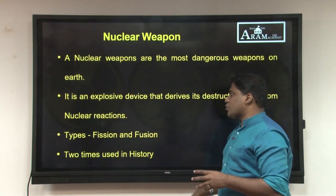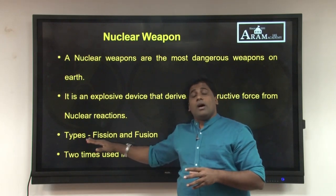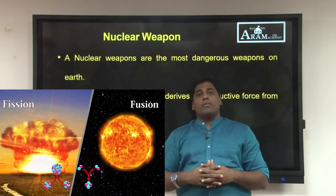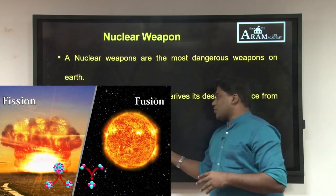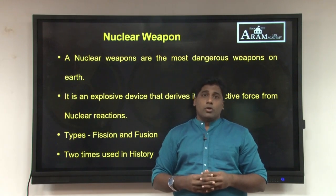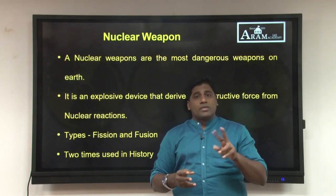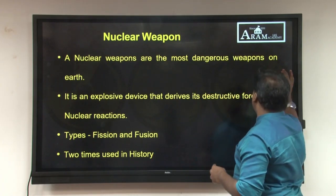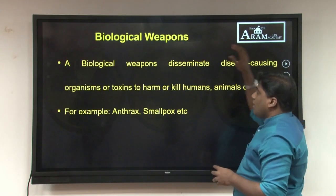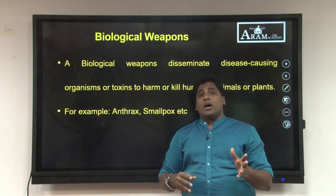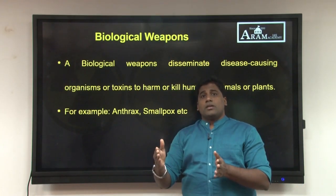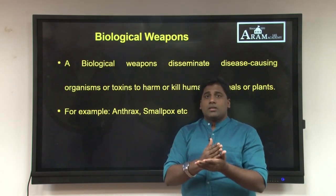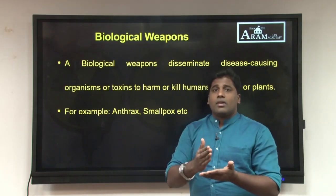There are two different types of nuclear weapons: one is fissile materials, and two is fusion weapons. Fusion weapons are called thermonuclear weapons because in fusion, both fission and fusion happen. As we discussed about the Biological Weapon Convention signed in 1975 to curb the proliferation of biological weapons.